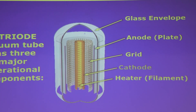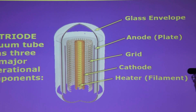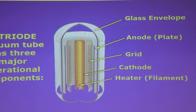We talked about vacuum tubes, such as in the vacuum tube amplifier. The most basic one is called a triode. A triode consists of three major operating components: a cathode, a grid, and an anode. The cathode radiates electrons. It radiates them through the grid to the plate. It's inside of a glass envelope. There's a heater inside of that cathode, and when it heats up the material in the cathode, it throws off electrons through thermionic emission.